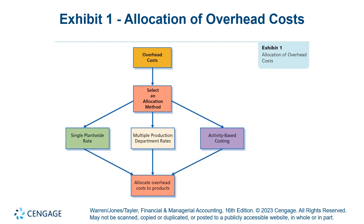These are inventoriable costs. They end up on the balance sheet in inventory until the product is sold, at which time they become part of cost of goods sold on the income statement. As we talk about these different ways of approaching cost allocation, the end result is the same — all of the costs end up being part of the cost of the product. It's just a matter of which route you take to get there. But if you're making multiple products, costs might shift from one product to another, so it's really important that we have an accurate sense of what our costs are.